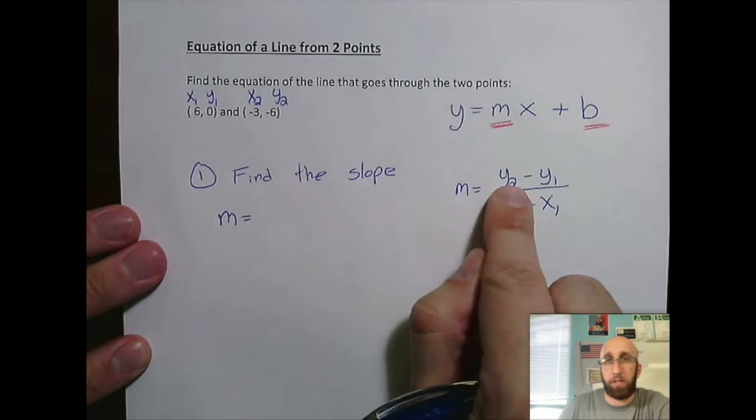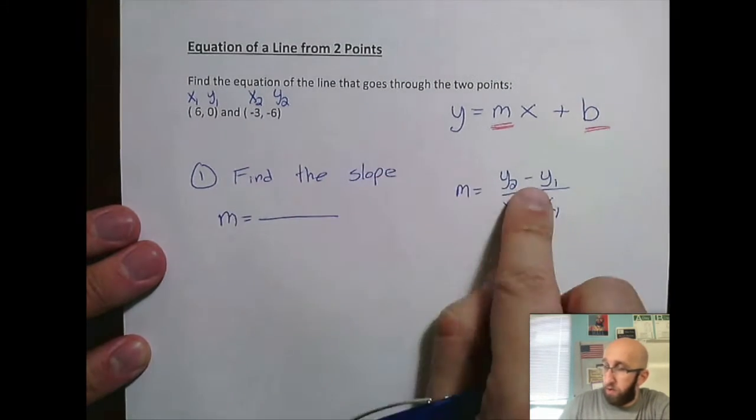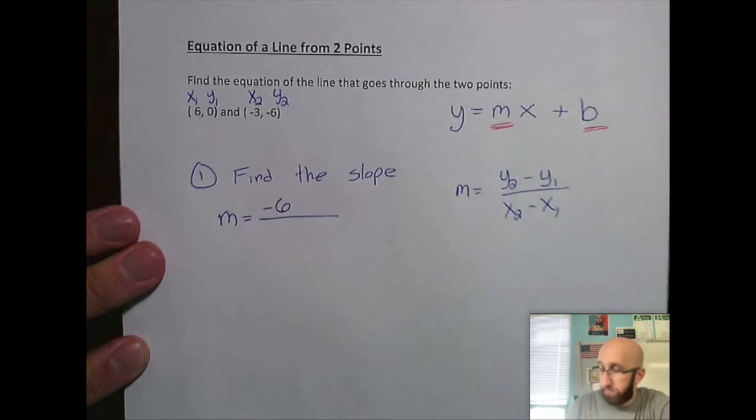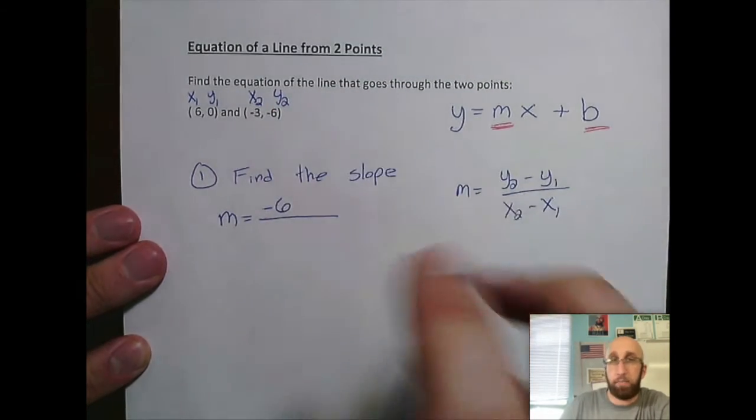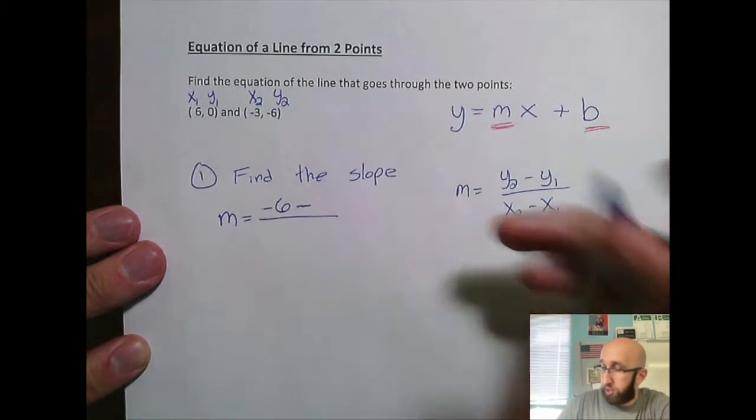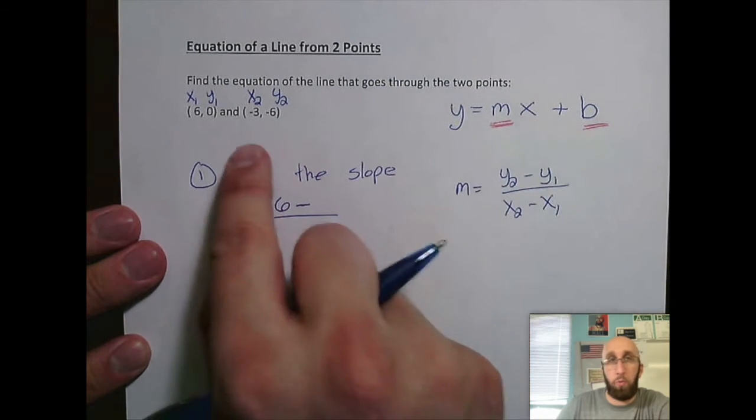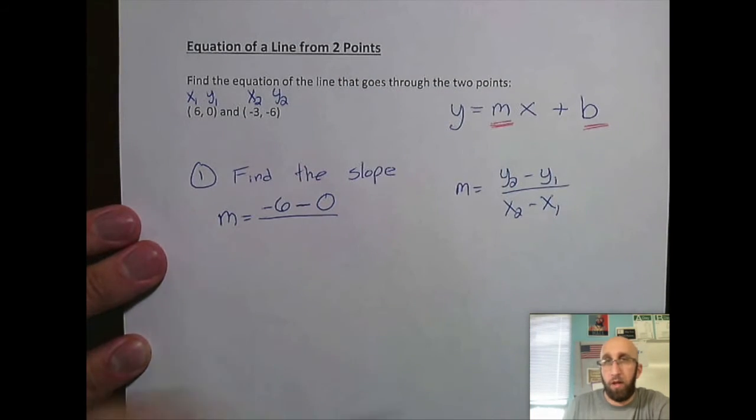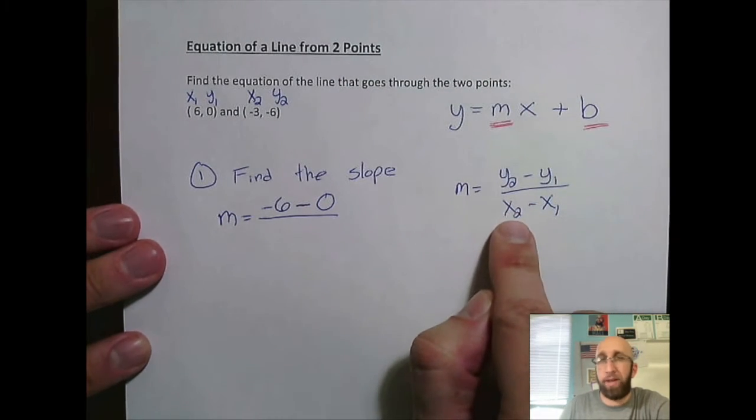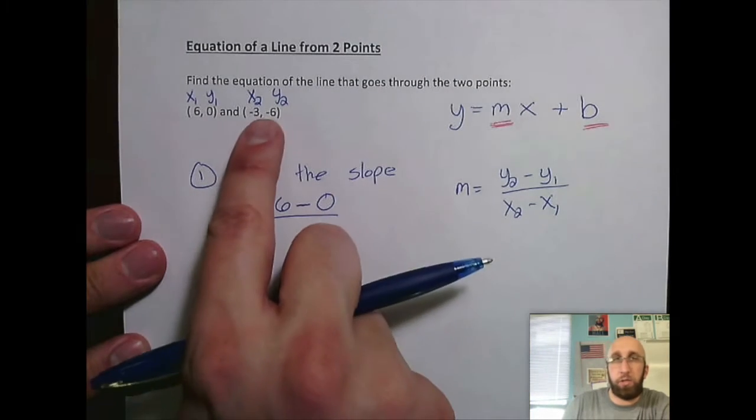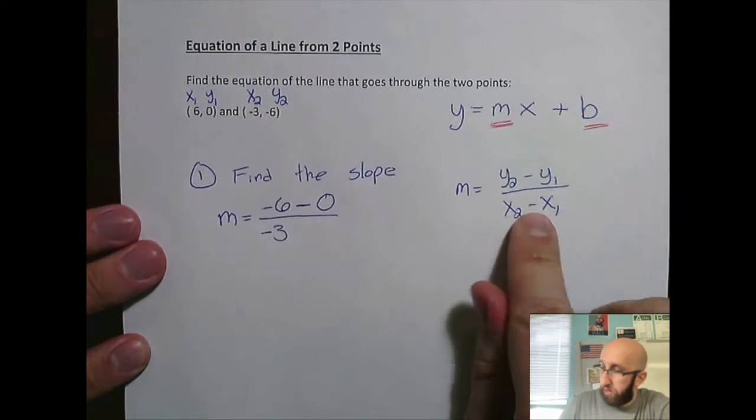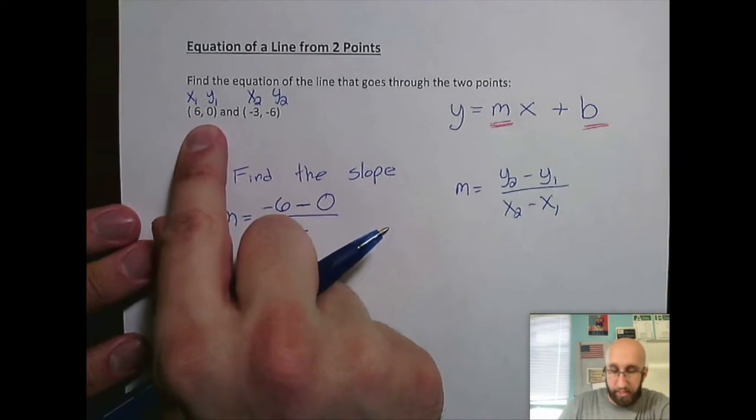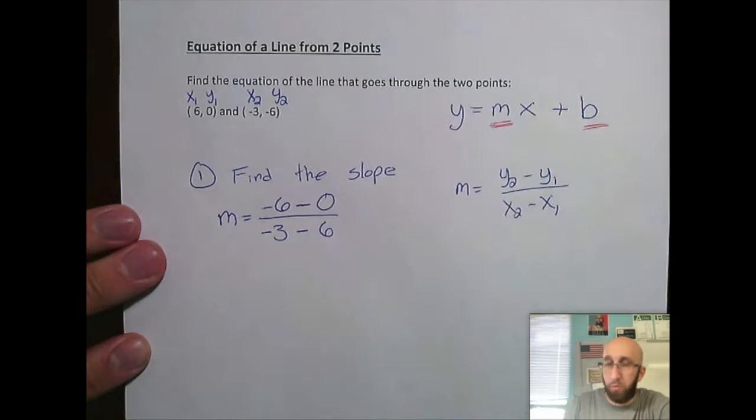To find my slope, I'm going to start with fraction of y2, y2 in this case was negative 6. Next, I need a subtraction. So here's my subtraction. And then I need y1, which according to our information, y1 is 0. Move to the bottom, the denominator. x2, x2 is negative 3. Subtraction. And then I need x1, which is 6.